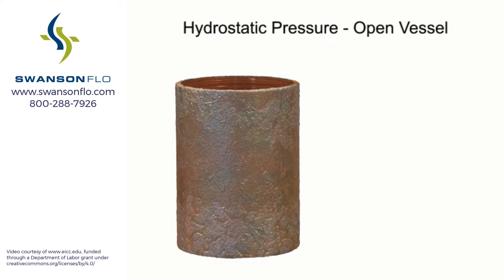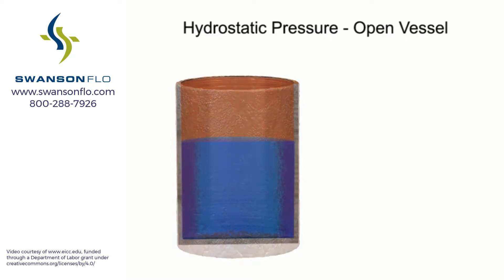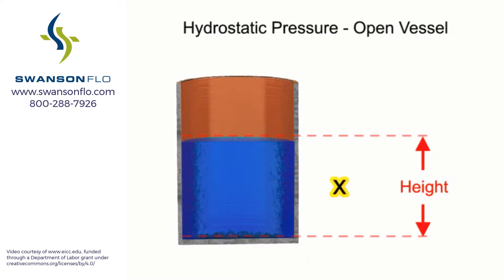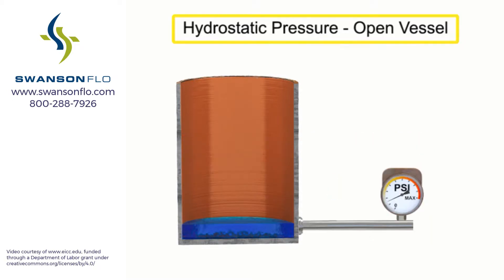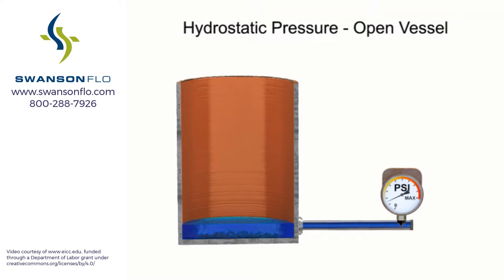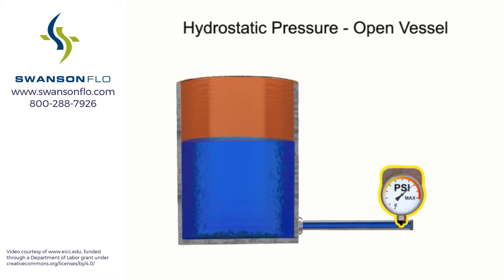The pressure exerted by a fluid material in a vessel is directly proportional to its height multiplied by its density. Hydrostatic pressure, or head pressure, is the force produced by a column of material. As the height of the material changes, there is a proportional change in pressure.